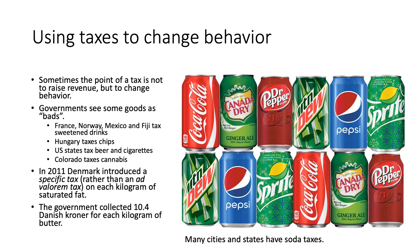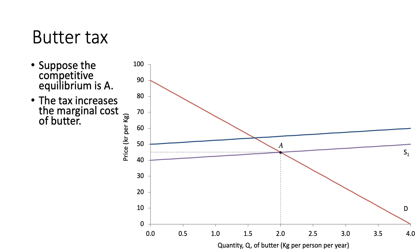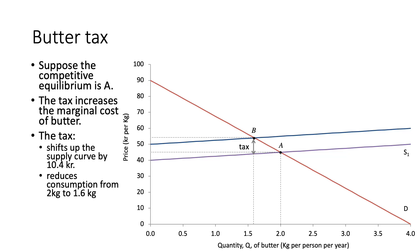Thinking about the efficacy and fairness of these taxes requires more critical assessment following the introduction of such policies. Looking at the butter tax, we have our supply and demand curves — the initial S1 and demand curve in red — with the competitive equilibrium at point A. Following the tax, the marginal cost of butter increases, shifting the supply curve up by 10.4 kroner. This shifts the equilibrium from point A to point B, reducing consumption from 2 kg to 1.6 kg.